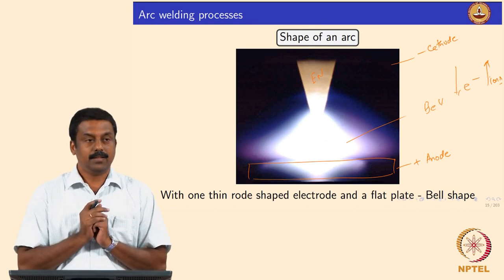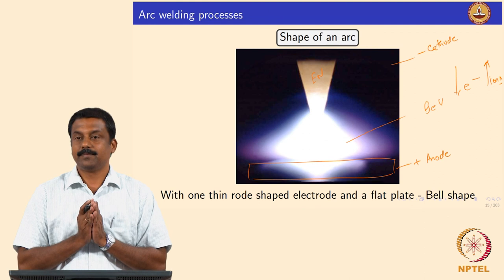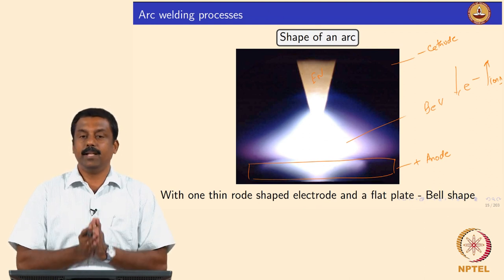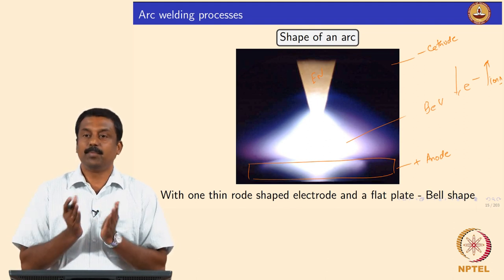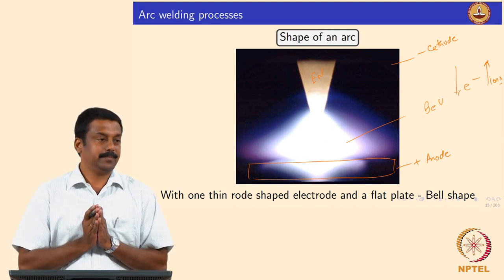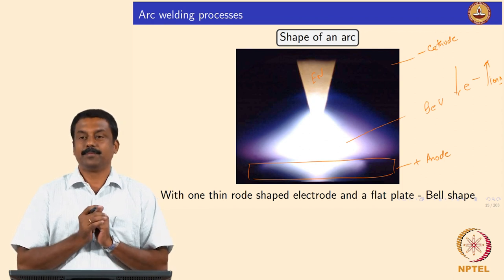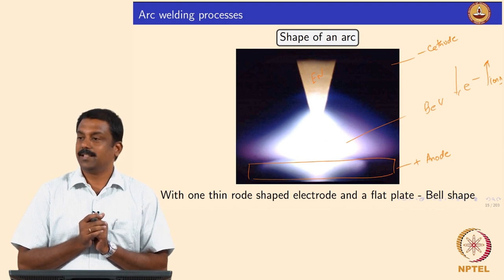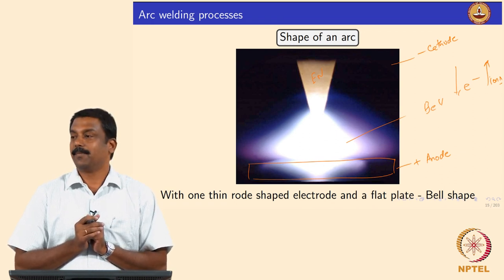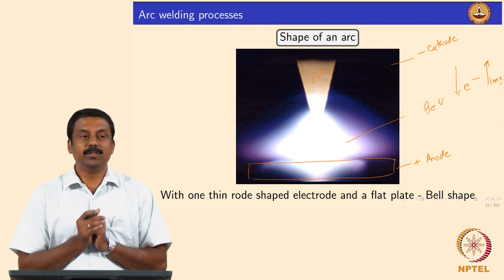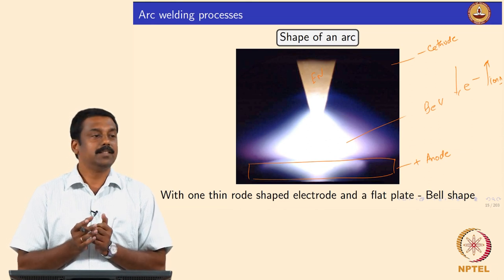Since electrons carry much more heat than ions, polarity is extremely important in welding — wherever electrons go, it is superheated and temperature will be high. In the case of electrode negative, the temperature will be high in the workpiece. If you are using a non-consumable electrode, meaning the electrode is not melting, it is advisable to keep the electrode negative.